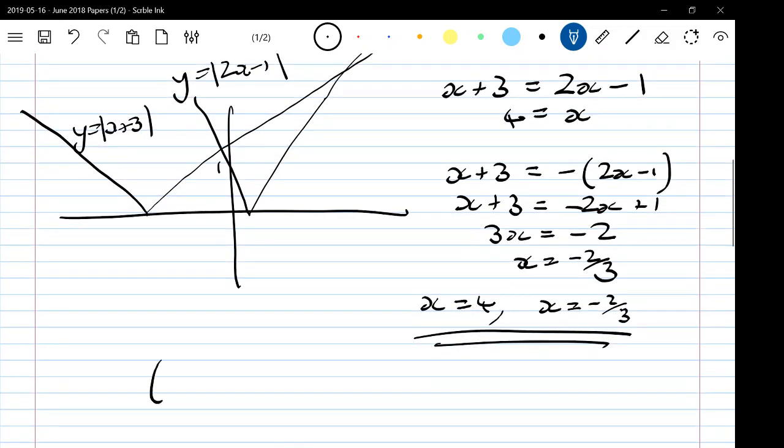Almost all of you, instead, said x plus 3 squared equals 2x minus 1 squared because that's the alternative way that we could have done this.